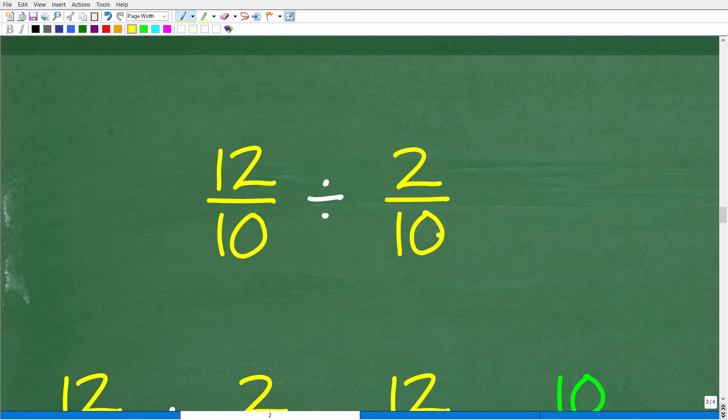Now let's finish this problem up. We have 12 tenths divided by 2 tenths. Now we have to talk about how to divide fractions, and this is a basic math skill as well. In order to divide fractions, we need to know how to multiply fractions. If this was a multiplication problem, you simply multiply the respective numerator and denominator. This would be 12 times 2, or 24 over 10 times 10, which would be 100. That's how you multiply fractions.